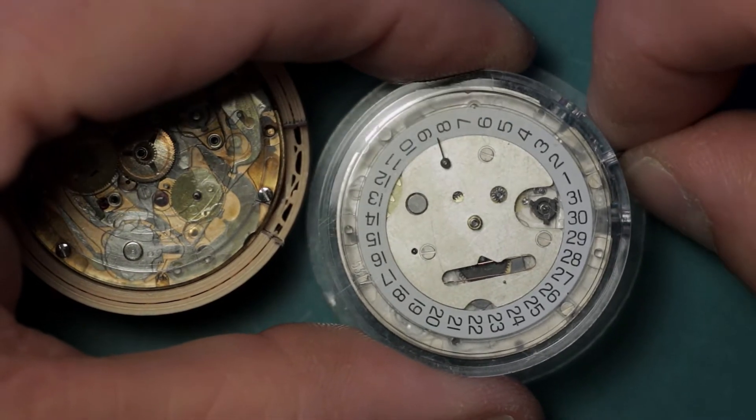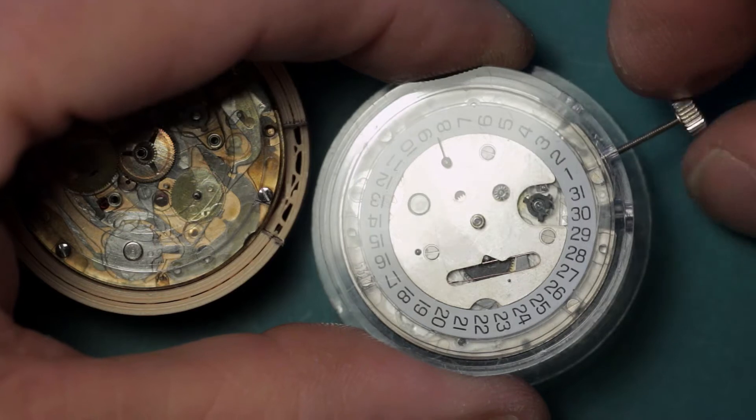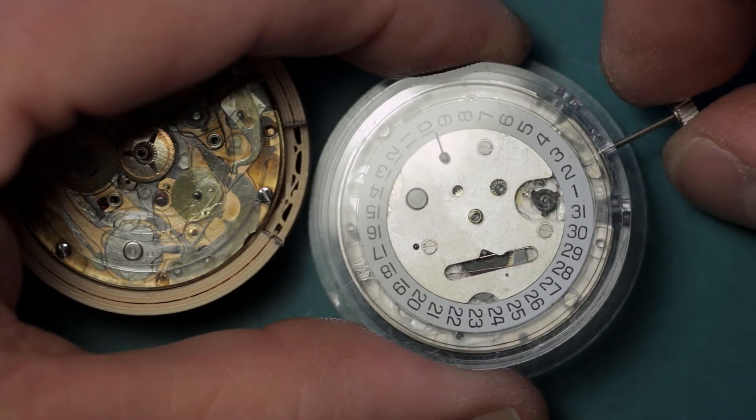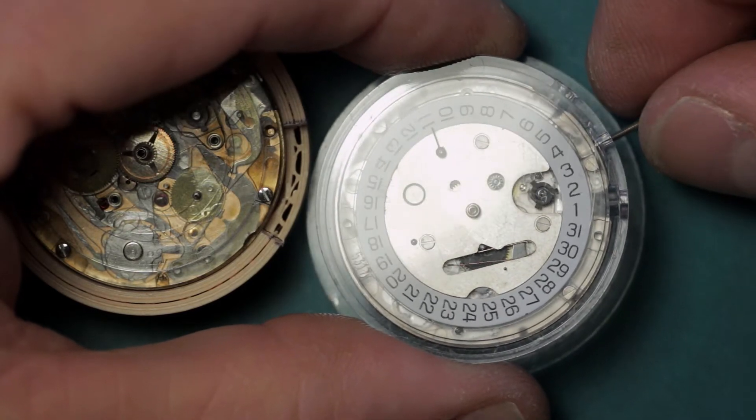To give you an idea of the rapid date change on this: if you pull the stem out one step, rotate it counterclockwise, you'll note it moves away and rotates in the wrong direction. Rotate it clockwise and it moves towards the calendar wheel.